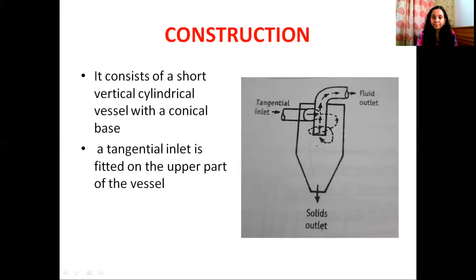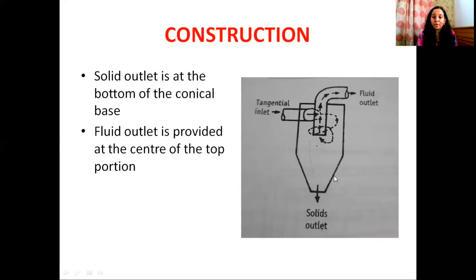The fluid outlet protrudes in the Cyclone Separator. It is provided by the solid outlet and the conical outlet. The fluid outlet is in the center. The Cyclone Separator is a short, vertical, cylindrical vessel. The bottom portion is conical in shape. It is provided with the tangential inlet at the top, and the fluid outlet is provided in the center.